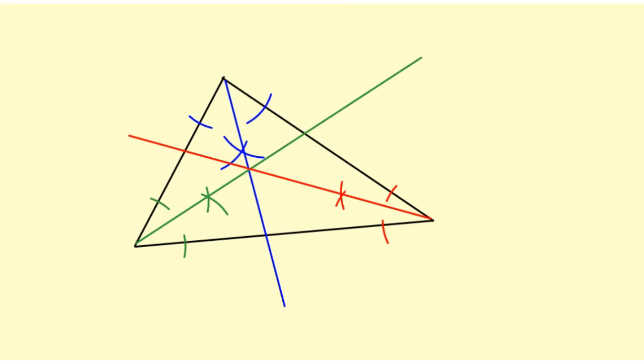I've constructed each of the angle bisectors in a different color so you could see the construction marks, and this point here is the in-center. Now, the reason it's called the in-center is because it is the center of a circle that is inscribed in the triangle.